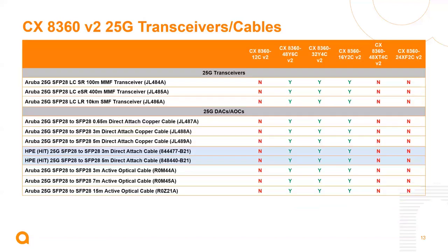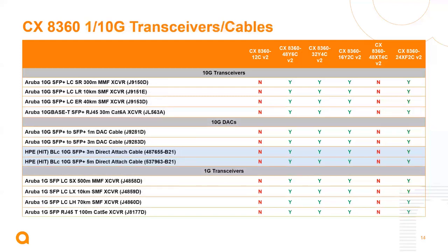We have 25 gig transceivers and DACs supported across the models that support 25 gig connectivity — the 48Y6C, the 32Y4C, and the 16Y2C. We also support 1 gig and 10 gig transceivers and DACs as listed. The BaseT model doesn't support those, and the 100 gig model only supports 100 gig and 40 gig, which is why you'll see 'no' listed there.